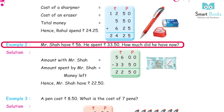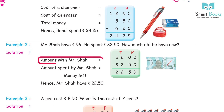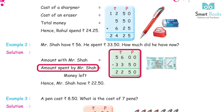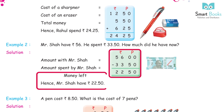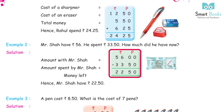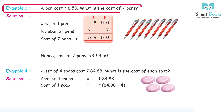Example 2: Mr. Shah had Rs. 56. He spent Rs. 33.50 on a pen. How much did he have left? Amount with Mr. Shah: Rs. 56. Amount spent: Rs. 33.50. Money left = Rs. 22.50.